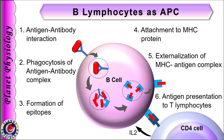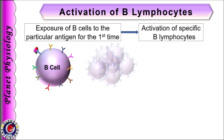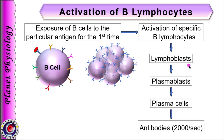Exposure of B-cells to the antigens for the first time causes activation of specific B-cells to multiply and differentiate to form lymphoblasts. Lymphoblasts in turn give rise to plasma blasts and then the plasma cells. Plasma cells secrete antibodies at the rate of about 2000 per second. These antibodies enter the circulation and destroy the invading organisms.